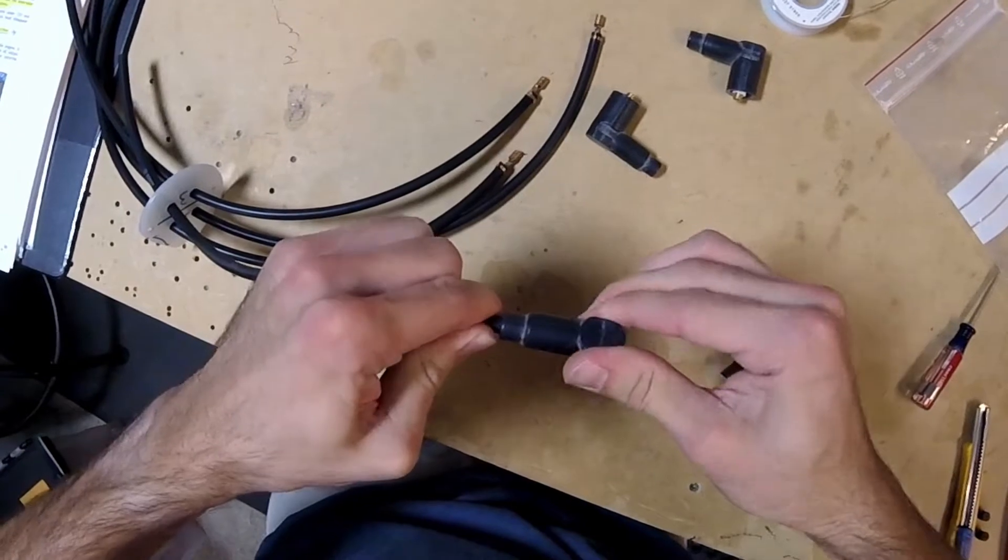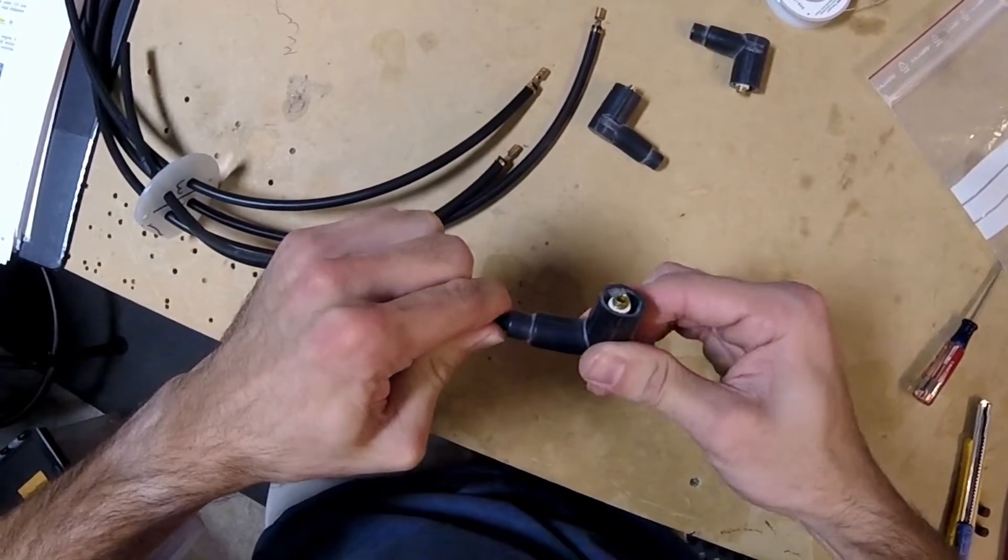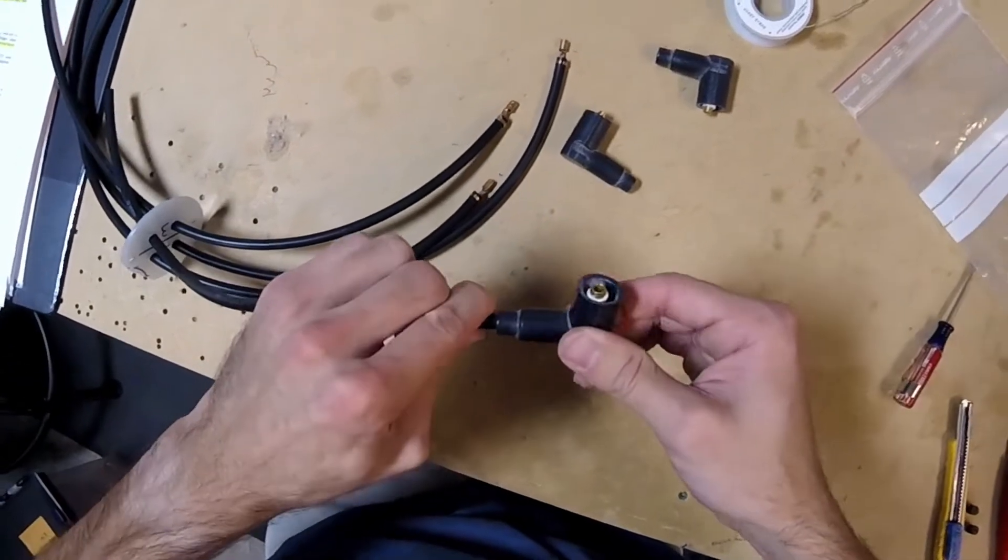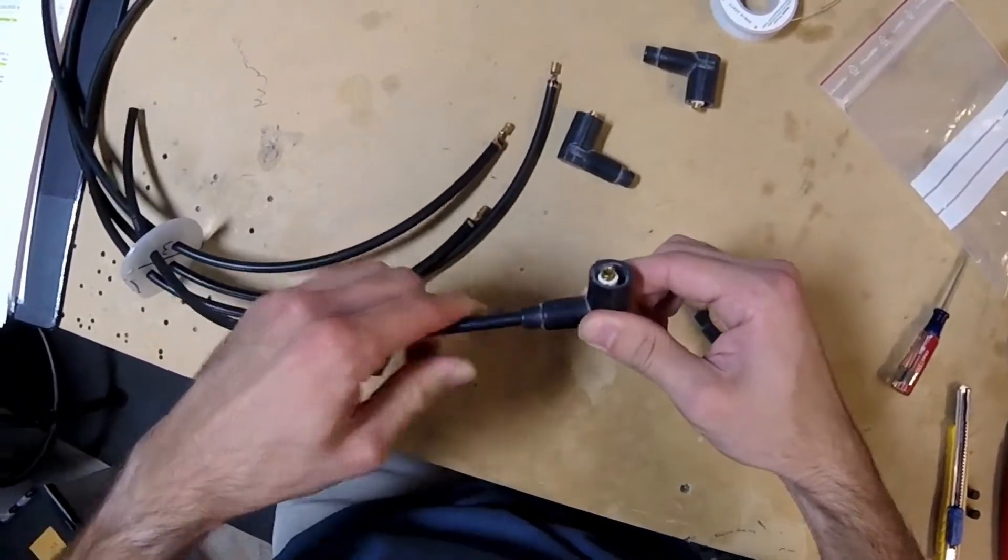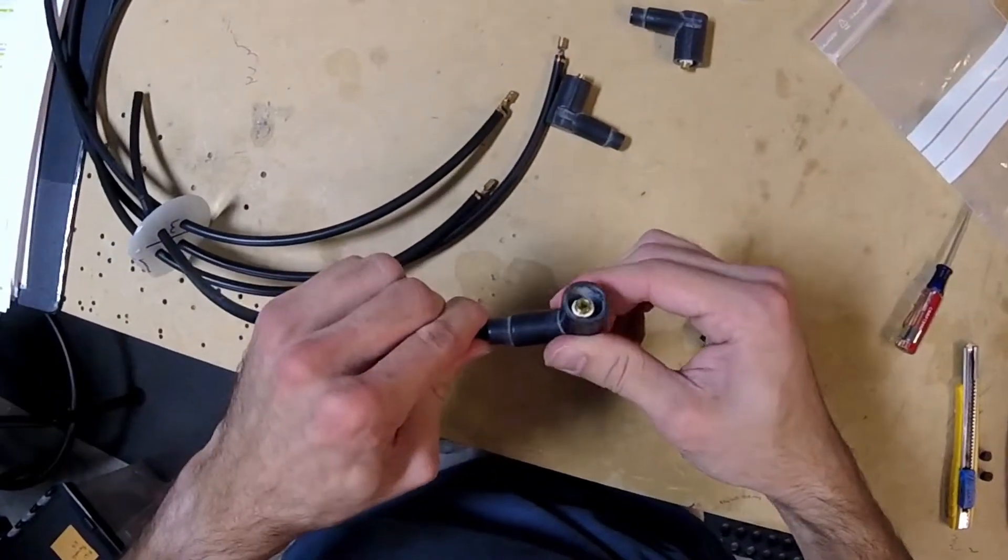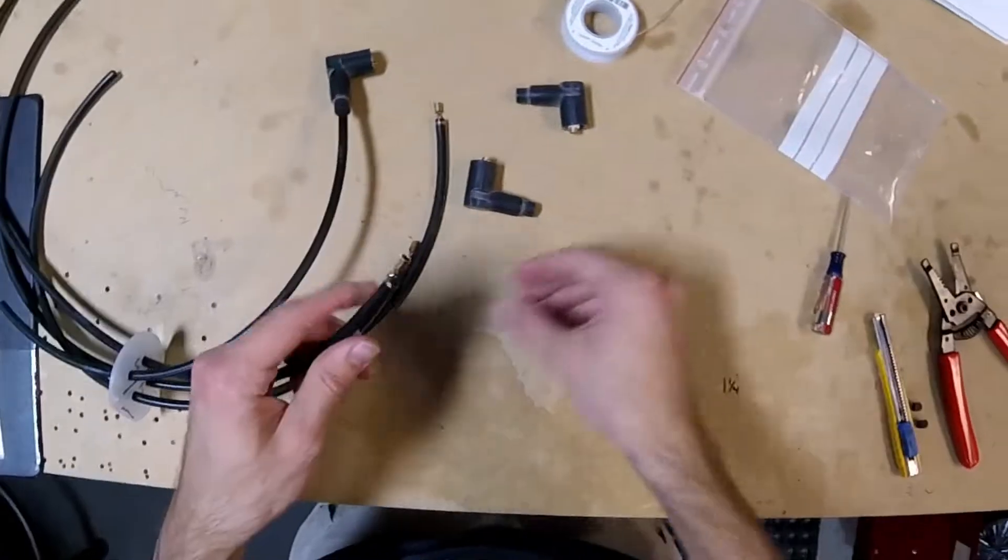And then screw it on with just a couple of turns. Okay, that'll do it. It's on really good. It's good and tight. Excellent. And then this side goes onto the coil. And we'll just do that with all of these.